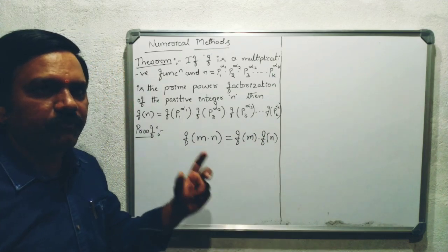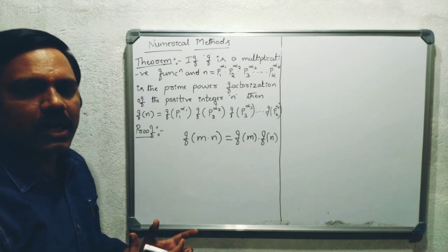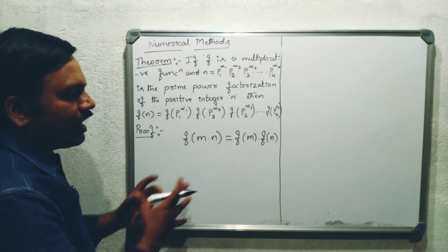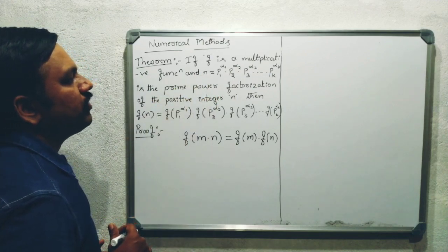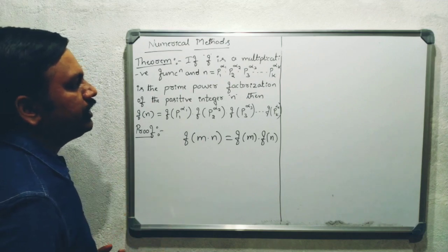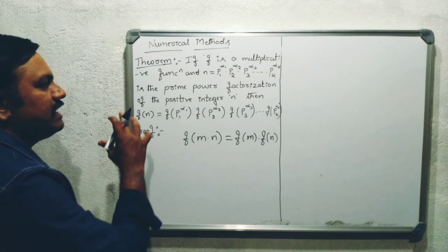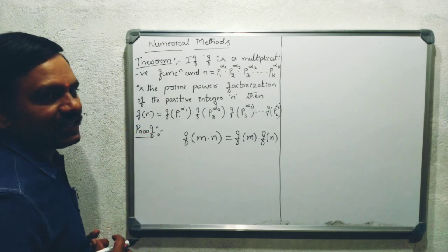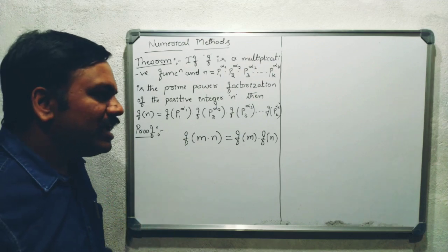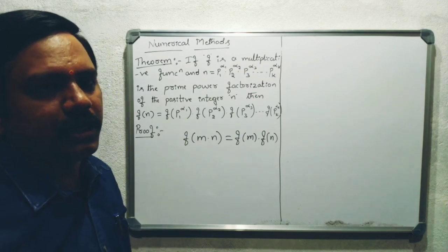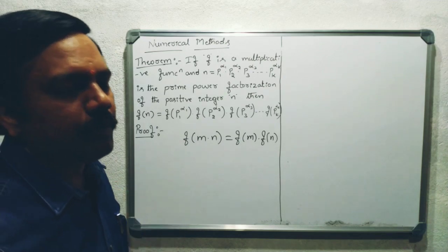A multiplicative function satisfies the condition f of M into N is equal to f of M into f of N when M and N are relatively prime. And N is equal to P1 to the power of alpha 1, into P2 to the power of alpha 2, into P3 to the power of alpha 3, and so on — this is called the prime power factorization.